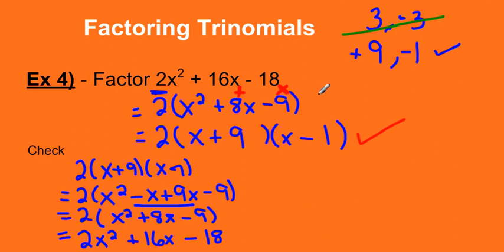And that is the basis of factoring trinomials. The main point to remember is that you're always looking for two numbers that multiply to give you the last term and add to give you the middle term.